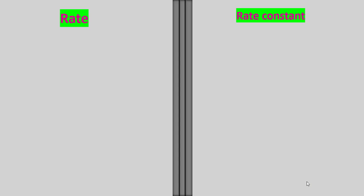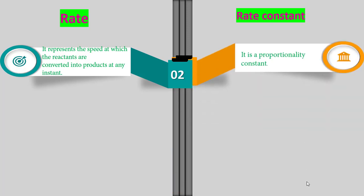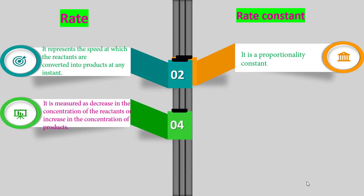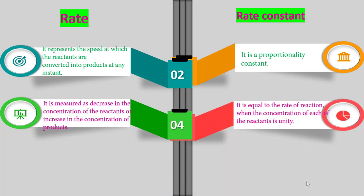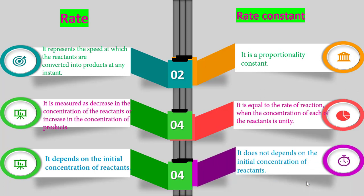Differences between rate and rate constant: Rate represents the speed at which reactants are converted into products at any instant. Rate constant is a proportionality constant. Rate is measured as the decrease in concentration of reactant or increase in concentration of product. Rate constant is equal to the rate when concentration of each reactant is unity. Rate depends on the initial concentration of the reactant, whereas rate constant does not depend on the initial concentration of the reactant.